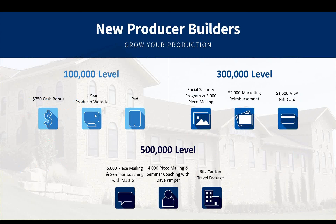For new producers, we provide three different levels. The first level is $100,000 — for today's purposes, $100,000 in single premium life gets you your commission plus a choice of a $750 cash bonus, a two-year website subscription, or a free iPad. At the $300,000 level, you get the Social Security Program and 3,000-piece mailing, or $2,000 in marketing reimbursement, or a $1,500 card.